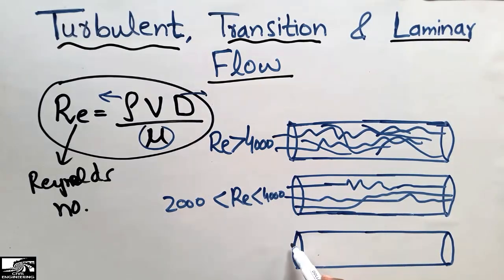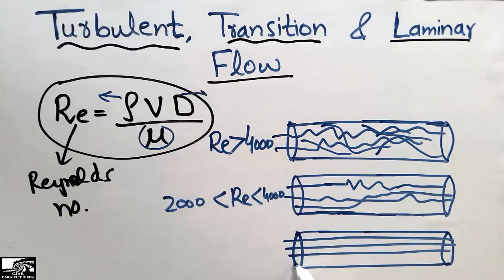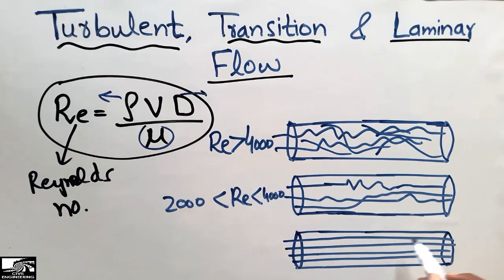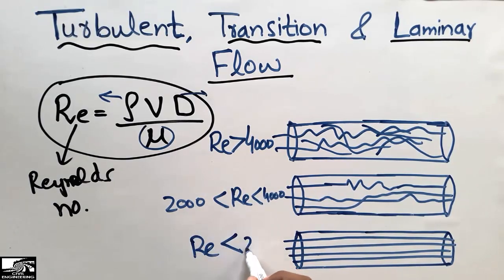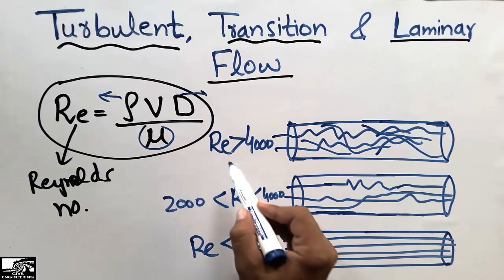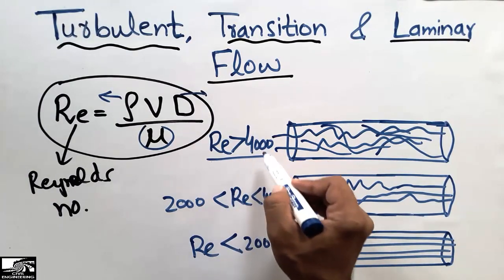The third type of flow is laminar flow, in which the particles move very smoothly throughout the pipe. Each molecule of the water passes in the same direction as the previous particle was moving. We call this type of flow laminar flow, and its Reynolds number is less than 2000.